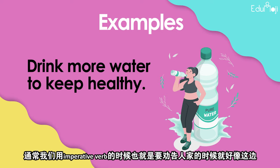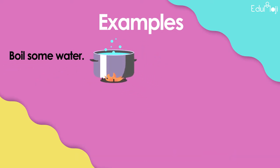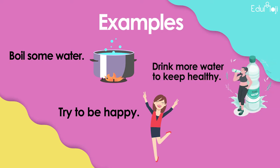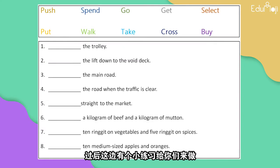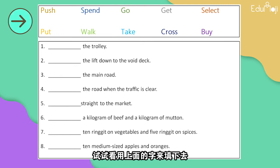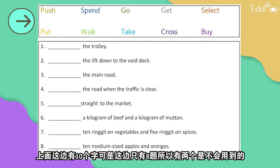Usually when we use imperative verbs, it's when we want to advise someone — like 'Boil some water', 'Try to be happy', 'Drink more water to keep healthy'. These are typically used when giving advice or knowledge, or giving a command.